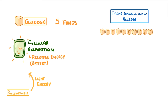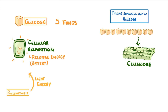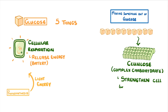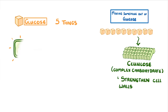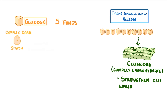The other four uses all involve making something out of glucose. For example, lots of glucose molecules can be combined to make cellulose, which is a complex carbohydrate that plants use to strengthen their cell walls. Glucose molecules can also combine to make starch, which is another complex carbohydrate.